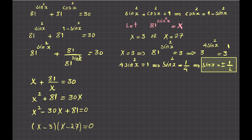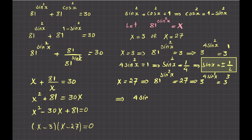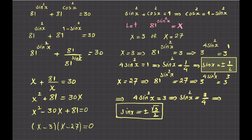For X equals 27: 81 to the power of sine squared x equals 27. Since 81 is 3^4 and 27 is 3^3, we get 3^(4 sin²x) equals 3^3, so 4 sin²x equals 3, meaning sin²x equals 3/4, and taking the square root gives sine x equals plus or minus square root of 3 over 2.